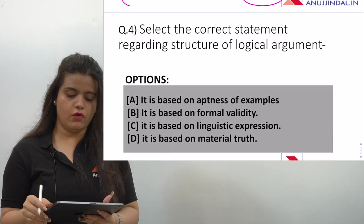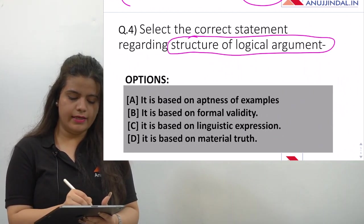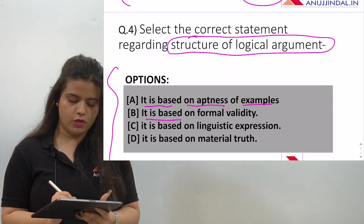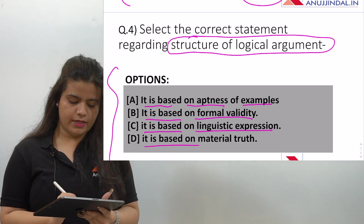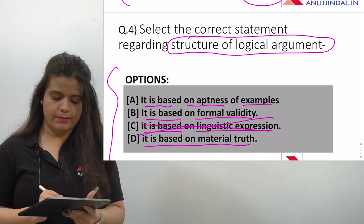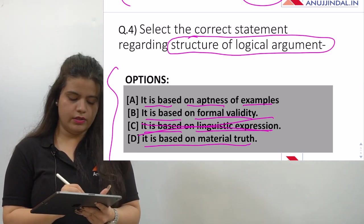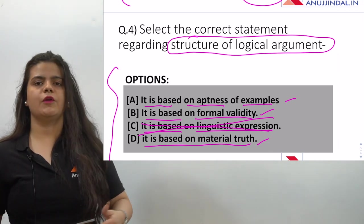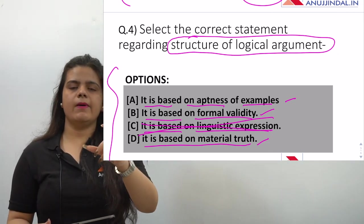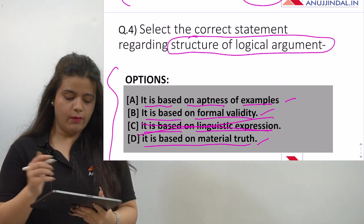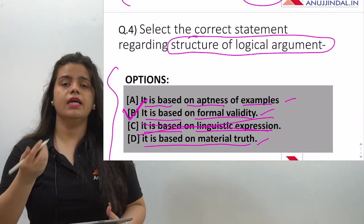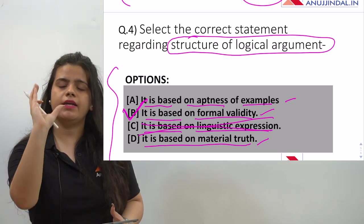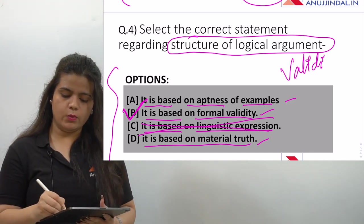The fourth question asks: select the correct statement regarding the structure of a logical argument. The options include: it is based on aptness of examples, formal validity, linguistic expression, or material truth. For logical arguments, validity is the most important element. The structure of a logical argument is based on formal validity — so that is the correct answer. Remember that validity is very important for logical argument structure.